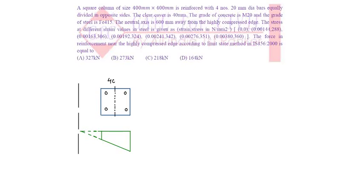A square column 400mm by 400mm is reinforced with 4 bars of 20mm diameter. The cover is given as 40mm, which is clear cover. So effective cover will be clear cover plus diameter by 2, that is 20 by 2, which is 50mm.